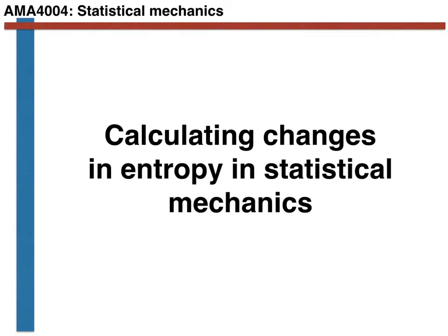Hello. In this video we are going to get to the equation that will finally allow us to make the connection between classical thermodynamics and the statistical concepts that we have introduced in the last few videos. What we are going to do is to arrive at an expression for ds, an infinitesimal change in the value of the entropy. Before we get on to that, let's just briefly review what we have done in the previous videos.